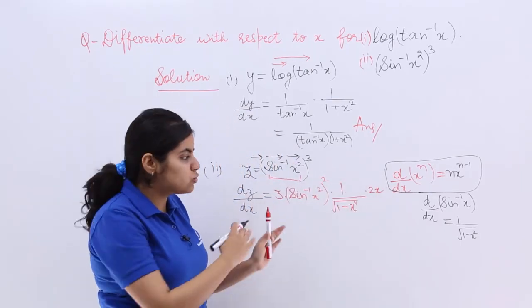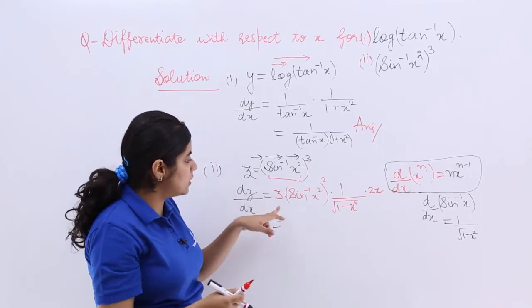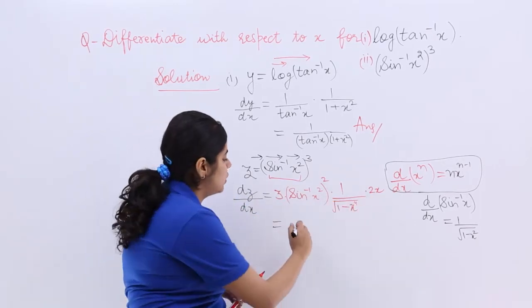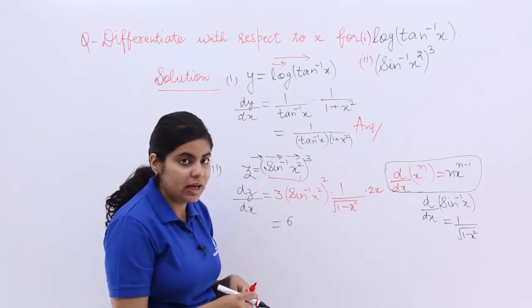The only task now left is to write it in a more simplified manner. See, what are the constants involved? 3 and 2. 3 times 2 makes it 6. Then you have here x. x1 makes it x.